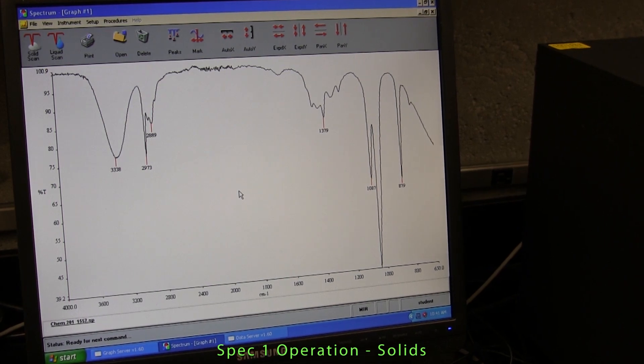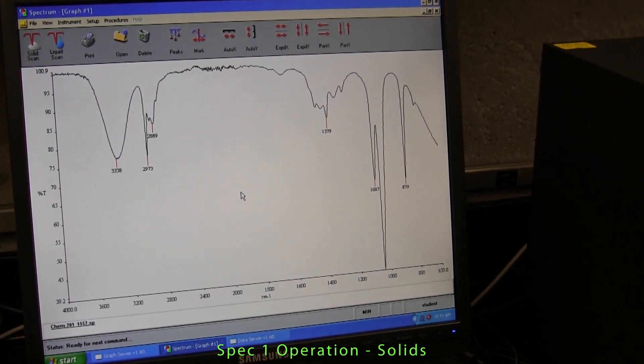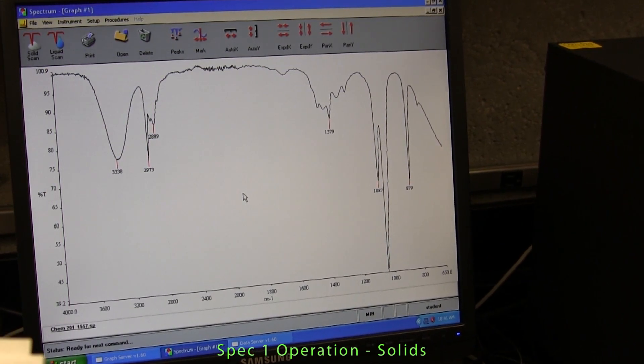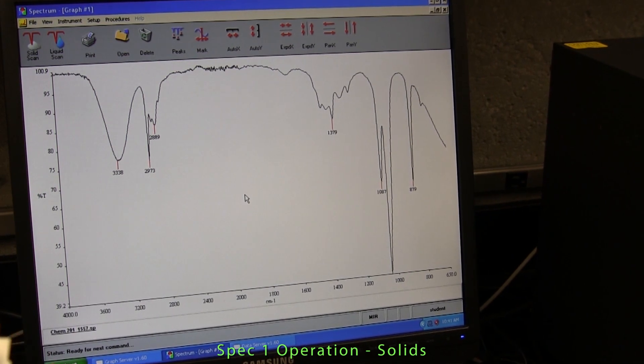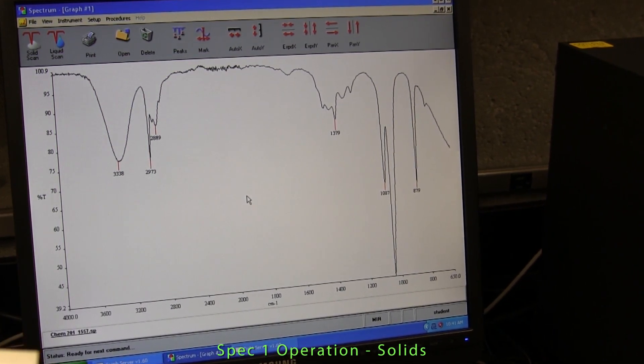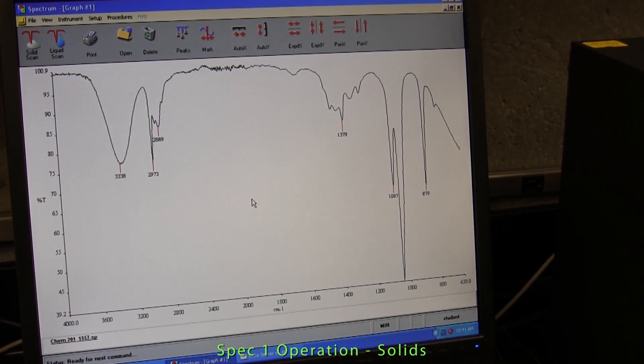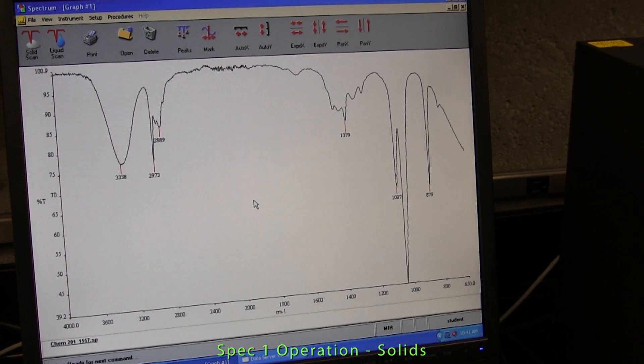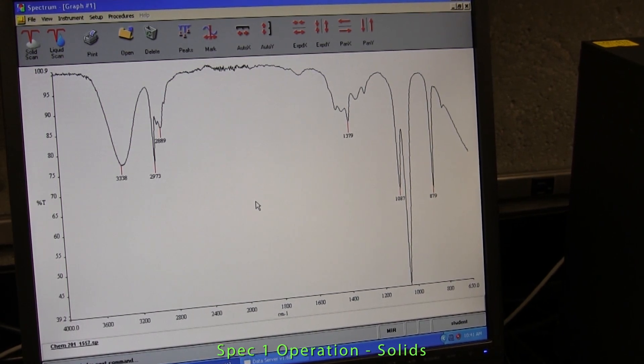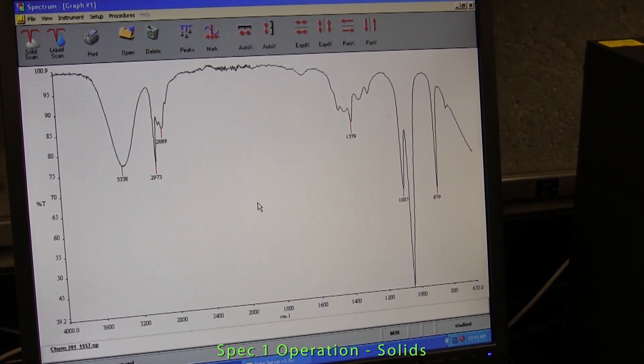The computer which controls the IR spectrometer will be switched on and the software, called Spectrum, will be up and running. If it's not, consult your lab supervisor or the lab technician. From here on, it's a fairly simple matter of following the on-screen prompts.